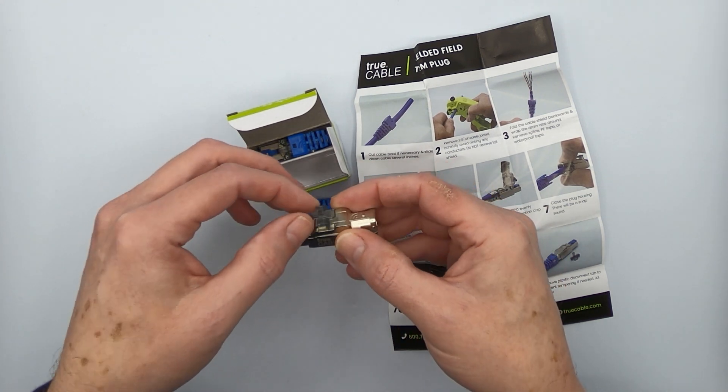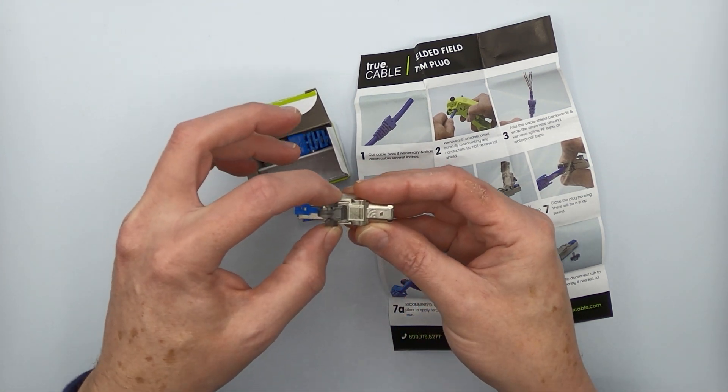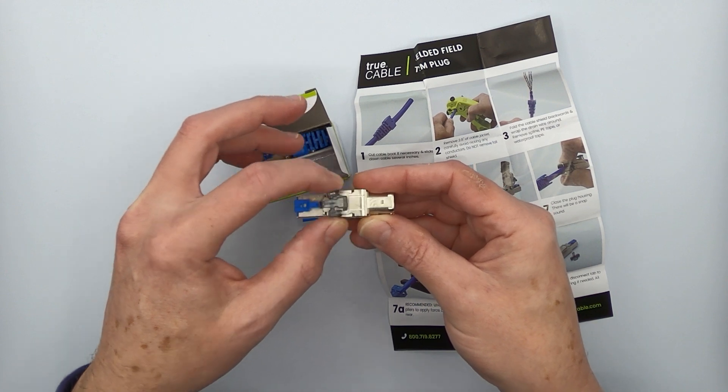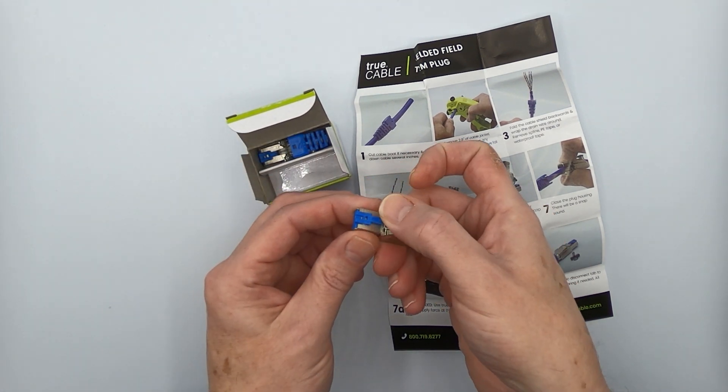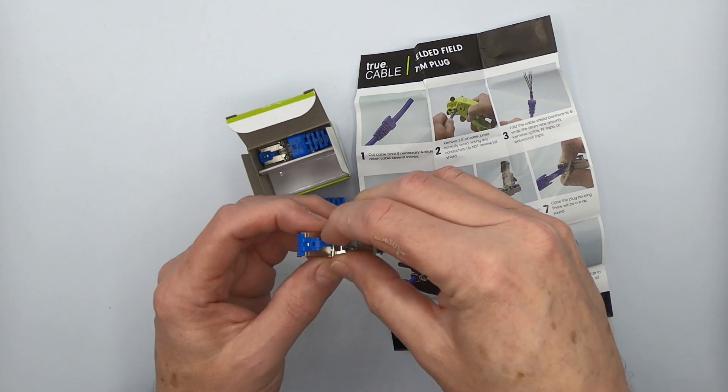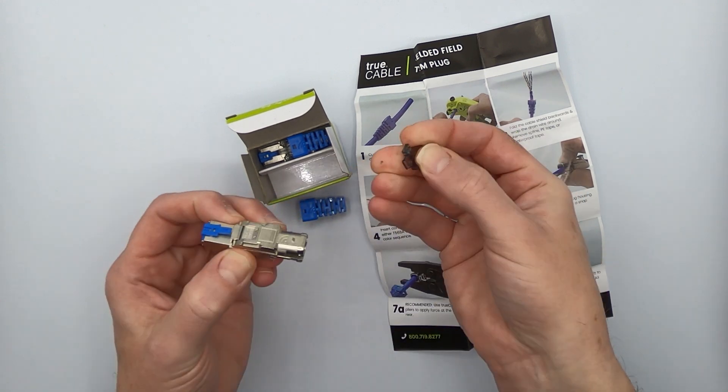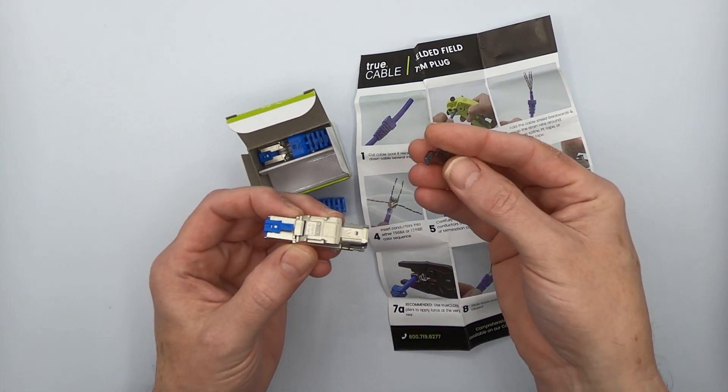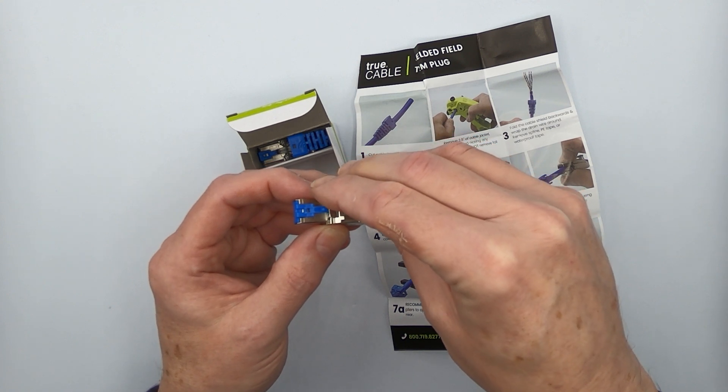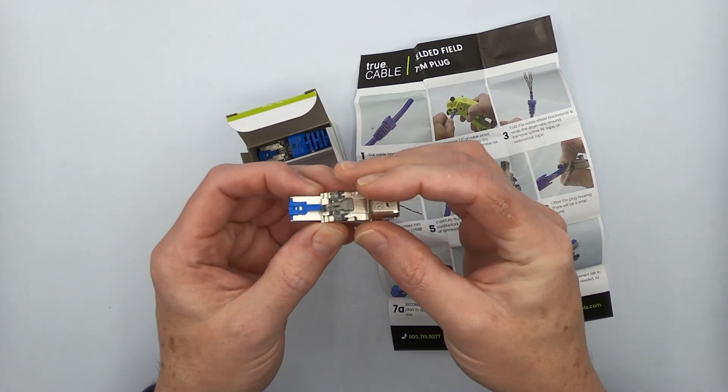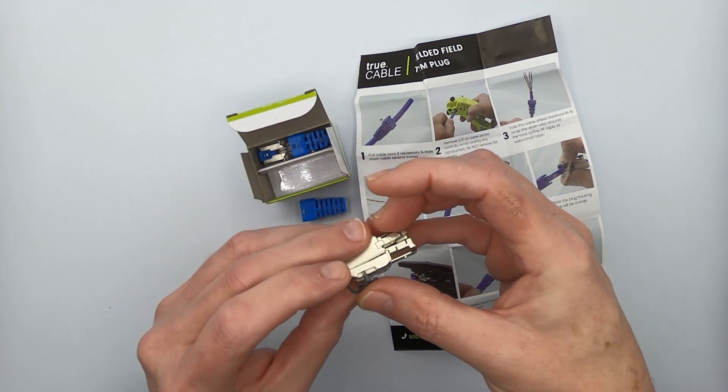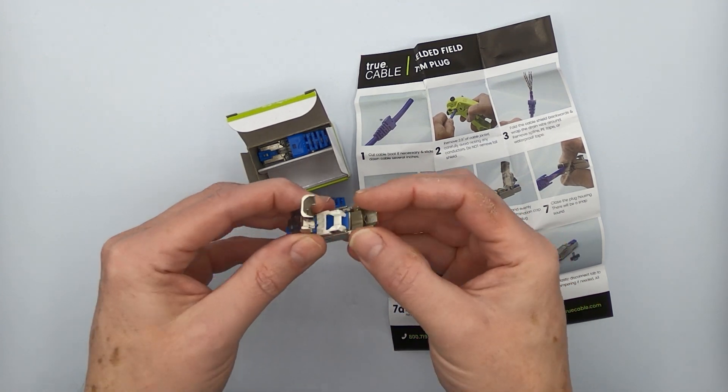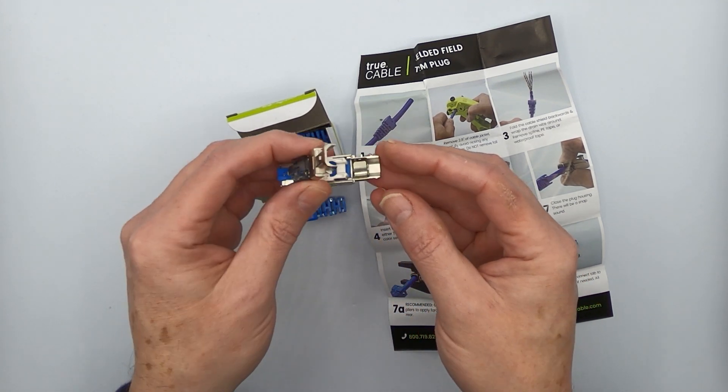In addition to all of that, you've got this cool sliding lock latch here, which allows you to remove the plug by pressing this plunger. But you can also take this key off, and then it helps prevent accidental disconnections and maybe even tampering, if that's a concern that you may have. So let's go ahead and terminate one of these guys and see how it all goes.